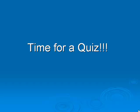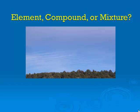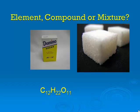Let's try some examples. We'll give you an example, you write it down and identify it, then we'll give you the answer so you can check. First example: lasagna — is this an element, compound, or mixture? If you said mixture, you're right. Air — is air an element, a compound, or a mixture? Air is also a mixture. Calcium — calcium is an element. Sugar, C12H22O11 — sugar is a compound.